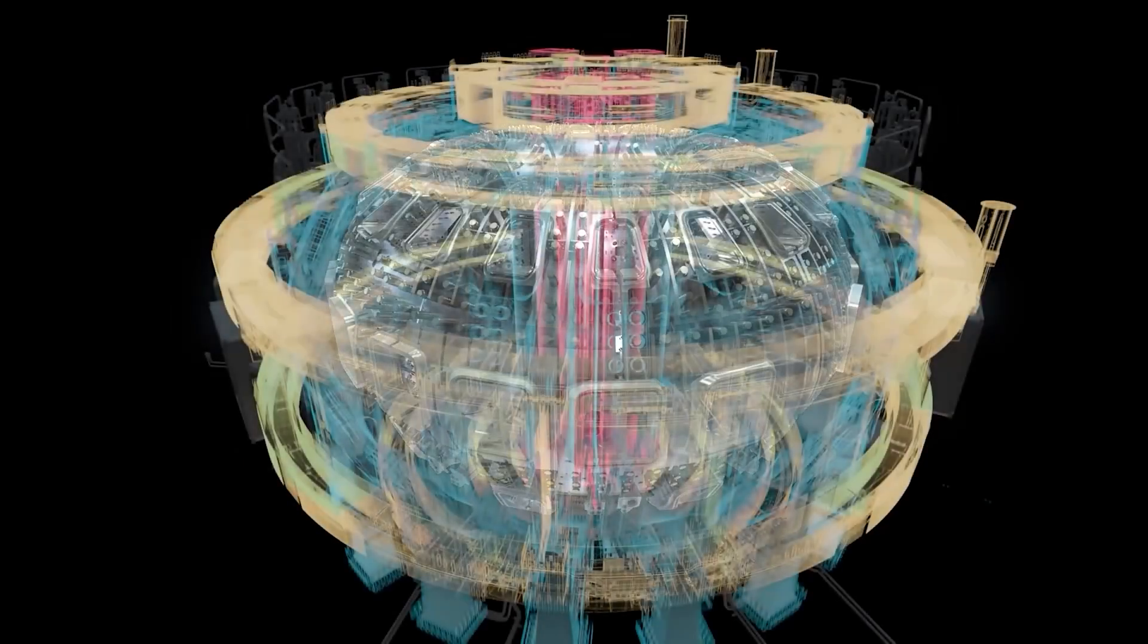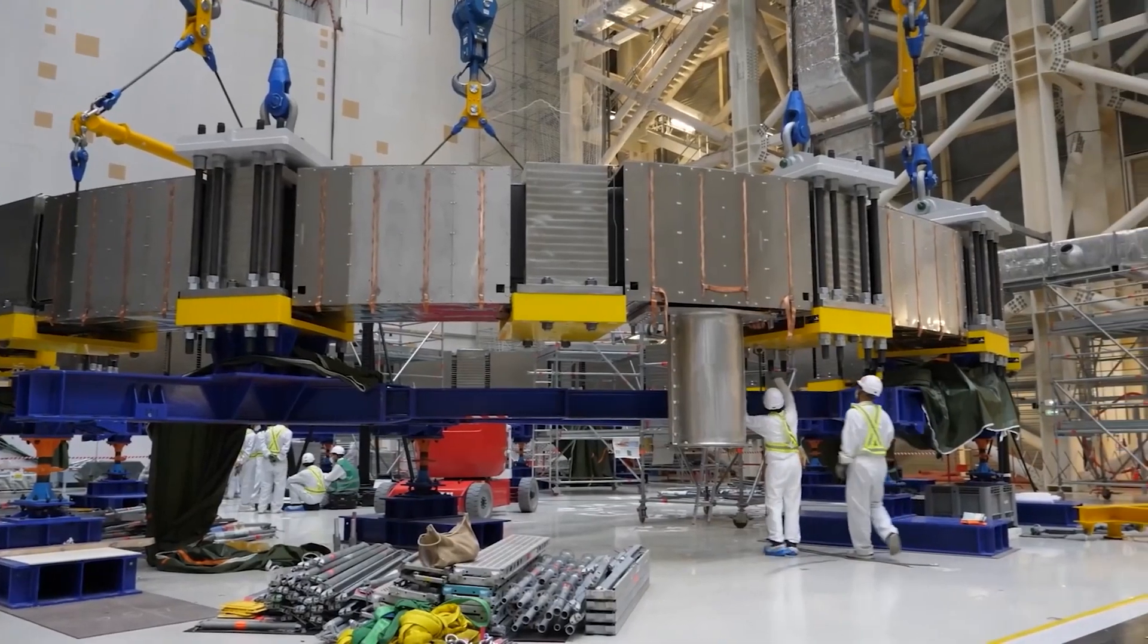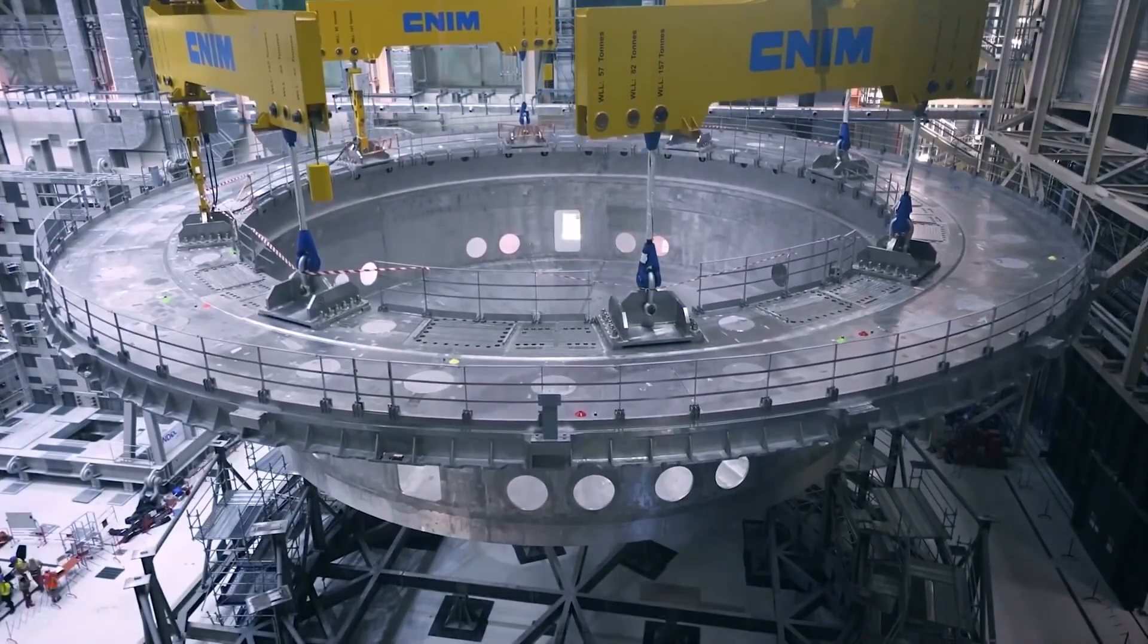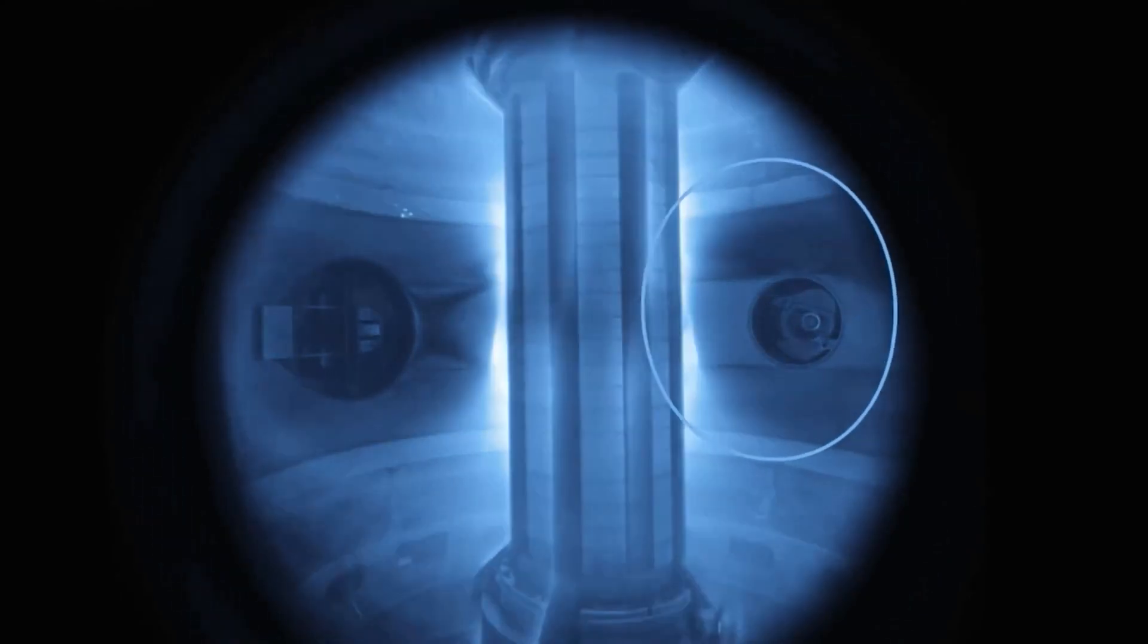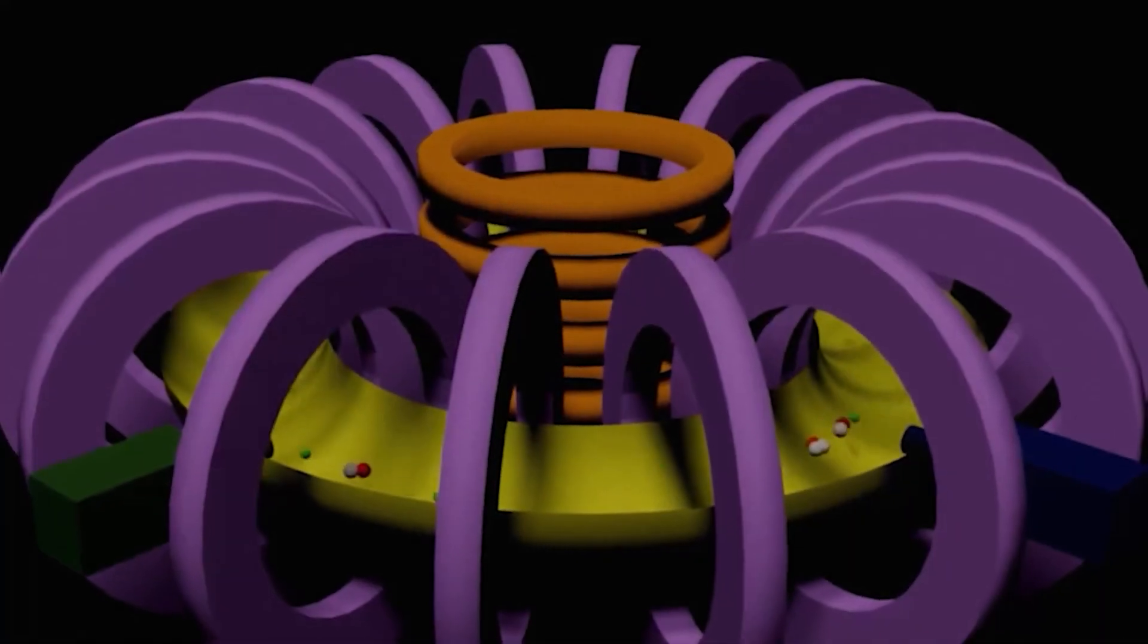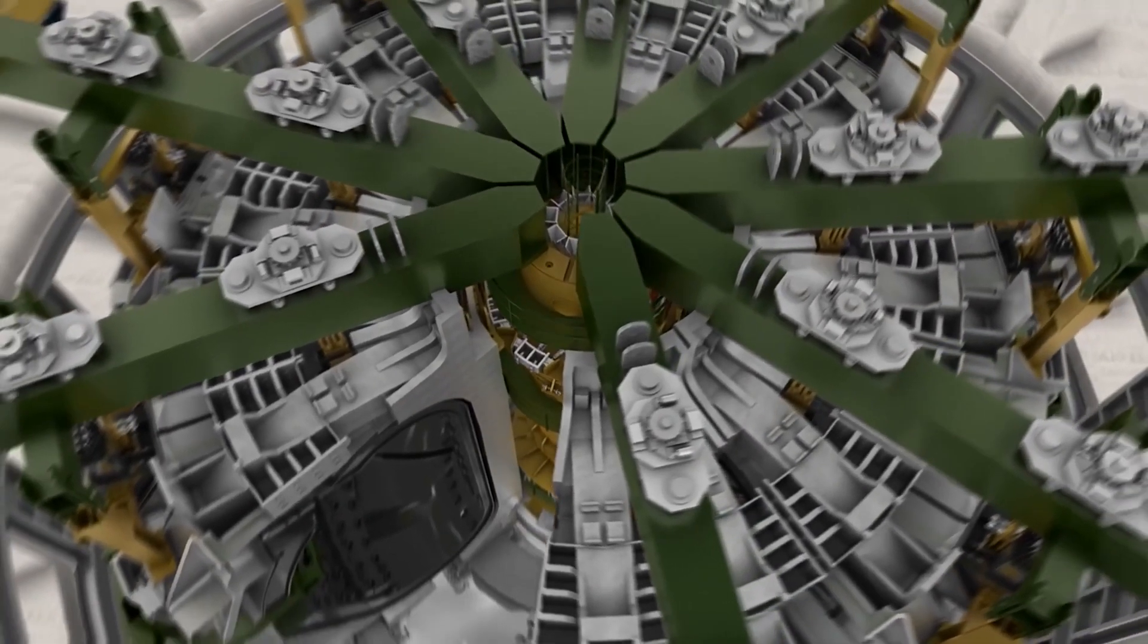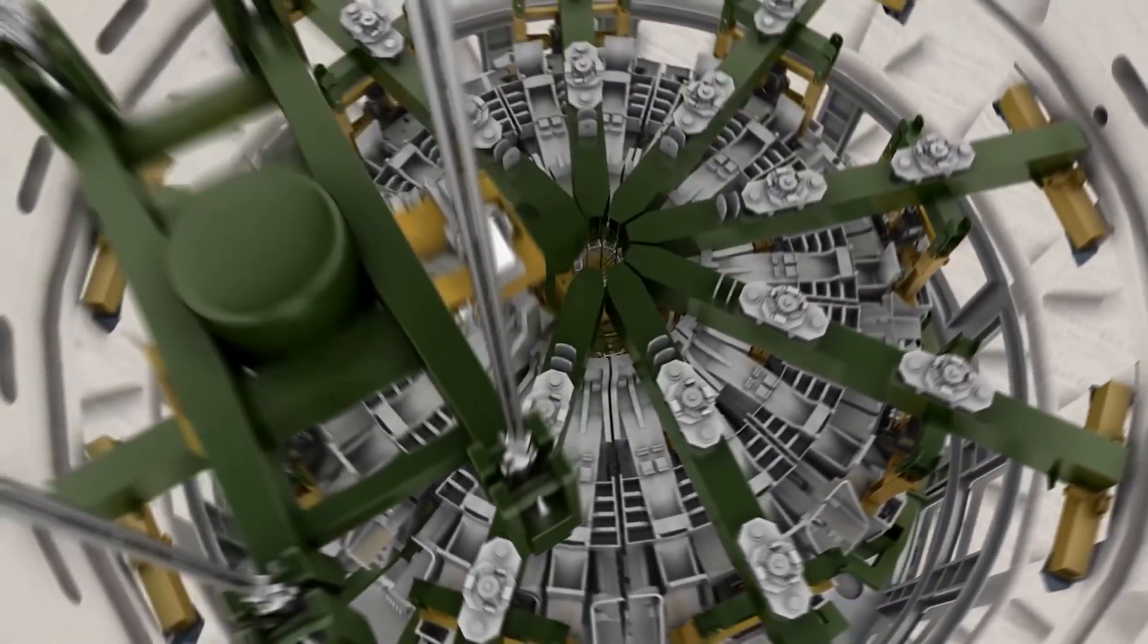Therefore, the fusion reactor ITER is currently being constructed in a collaborative effort of several countries in France. Its purpose is to demonstrate the functionality of the so-called tokamak concept. This concept belongs to the magnetic confinement method and involves a total of 24 gigantic field coils, weighing up to 400 tons. The plasma is confined within a donut-shaped magnetic cage.